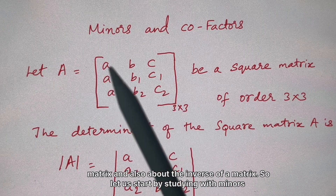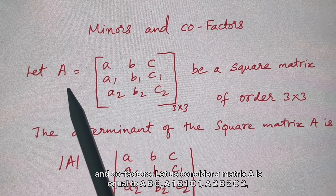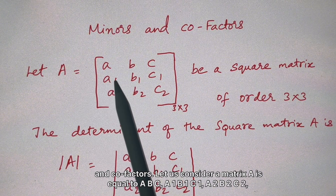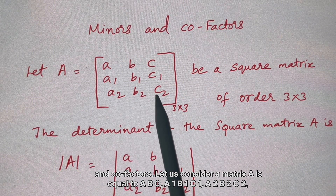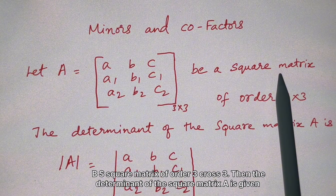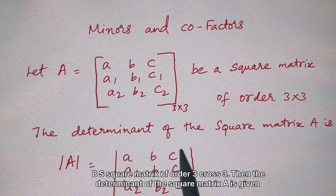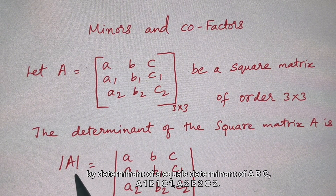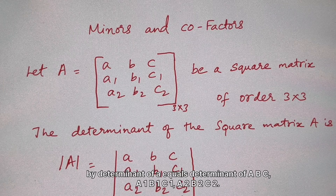Let us start by studying minors and cofactors. Let us consider a matrix A equal to [a, b, c; a1, b1, c1; a2, b2, c2], a square matrix of order 3×3. The determinant of the square matrix A is given by the determinant of that 3×3 array.